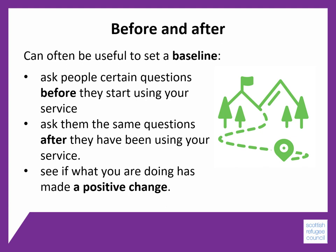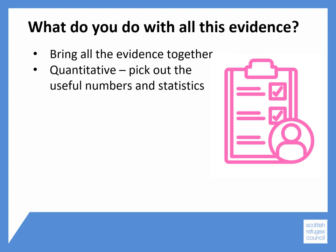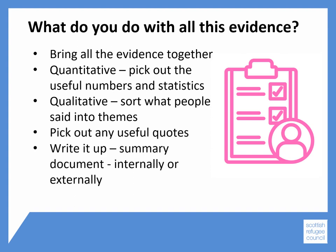So now that you've collected all of this evidence, what do you do with it? Firstly, bring all the evidence together. For quantitative evidence, pick out the useful numbers and statistics. For qualitative, sort what people said into broad themes and pick out any useful quotes. It's a good idea to write everything up and keep a record of all your evidence, but you may also want to edit it down into a summary document, which could be used internally by your own group or externally for the people who use your service and for partners and funders.